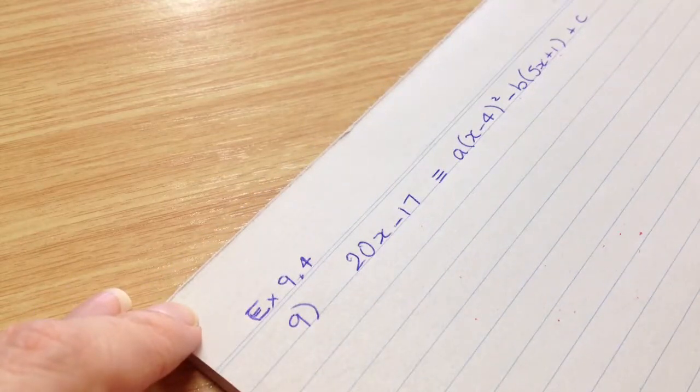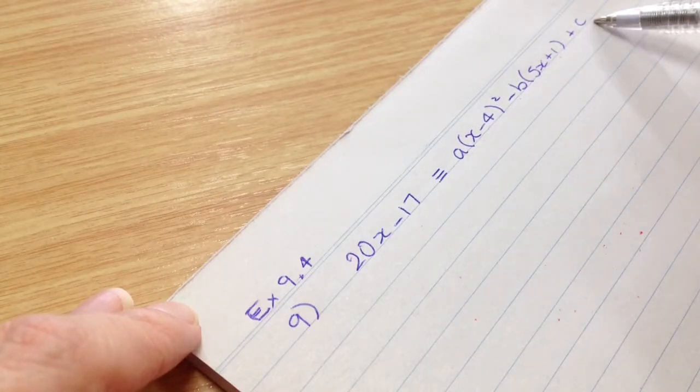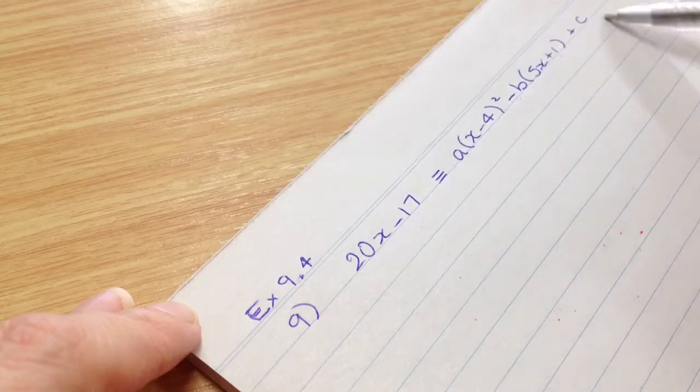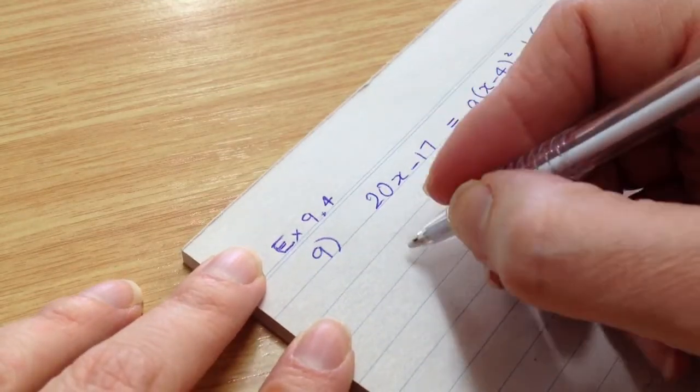Okay, that's the question. We have to try to find a, b and c. So what we do is we take the right hand side of this and we expand it all out. So let's write that down. We're going to write that down again.